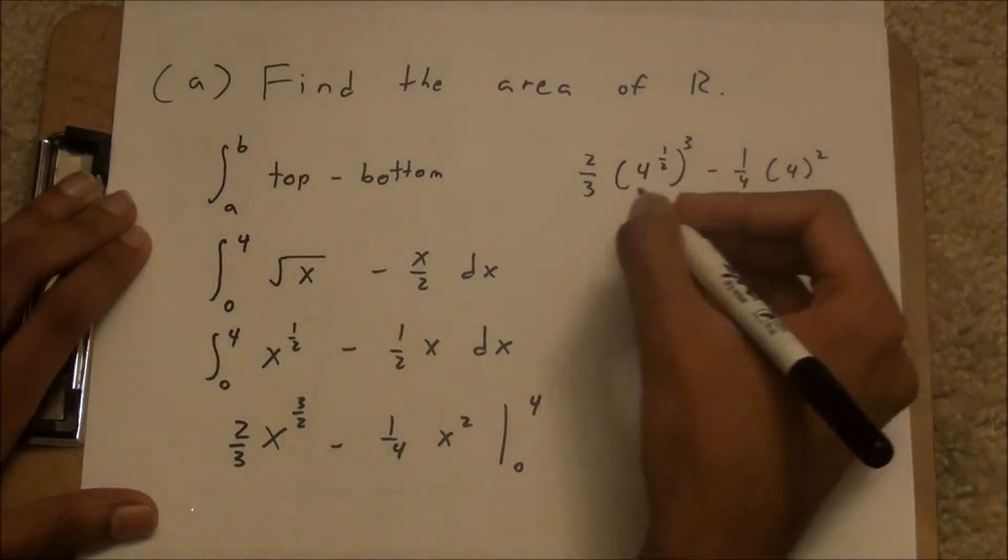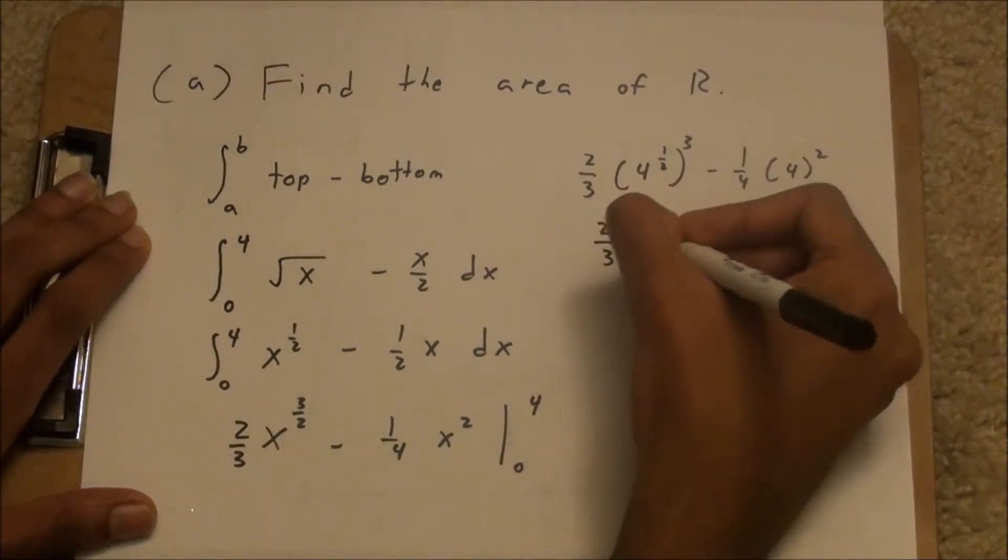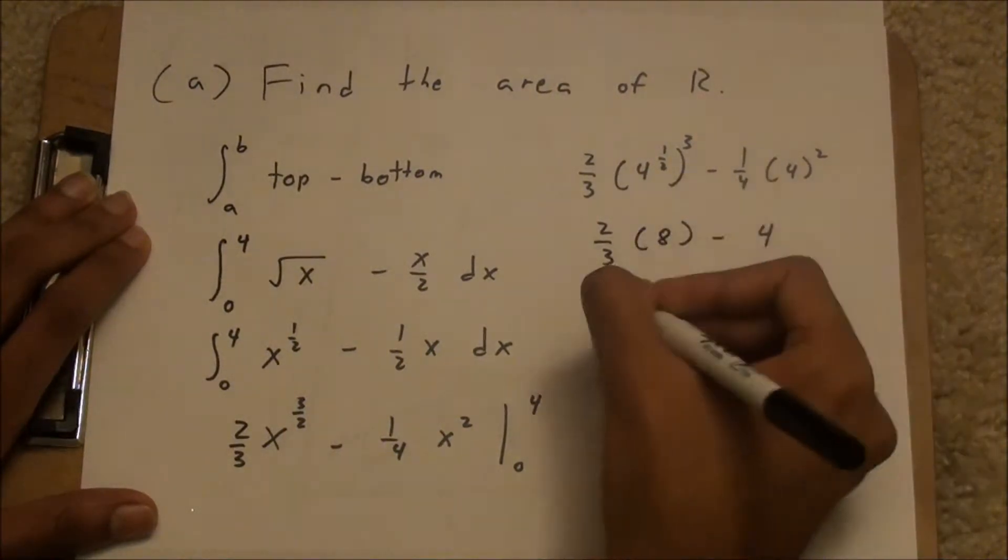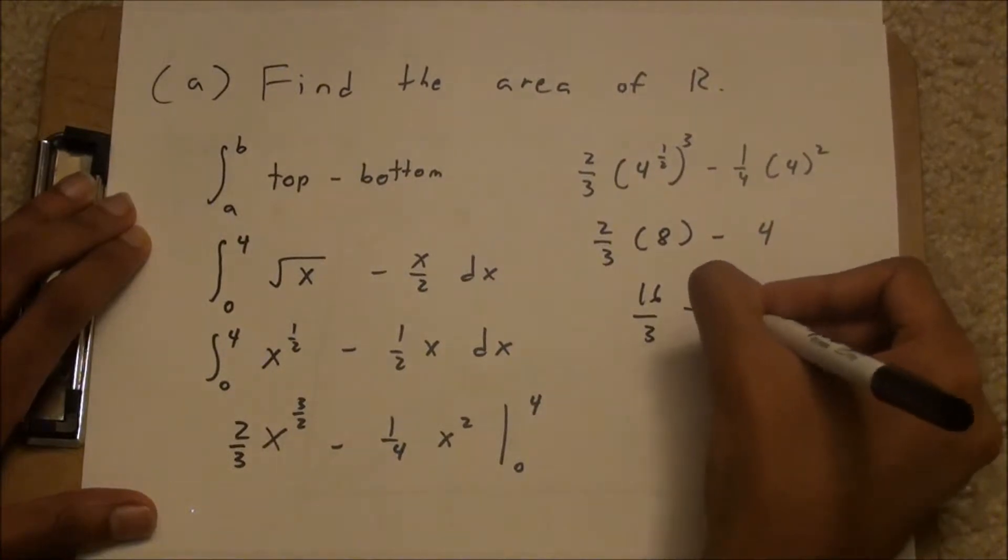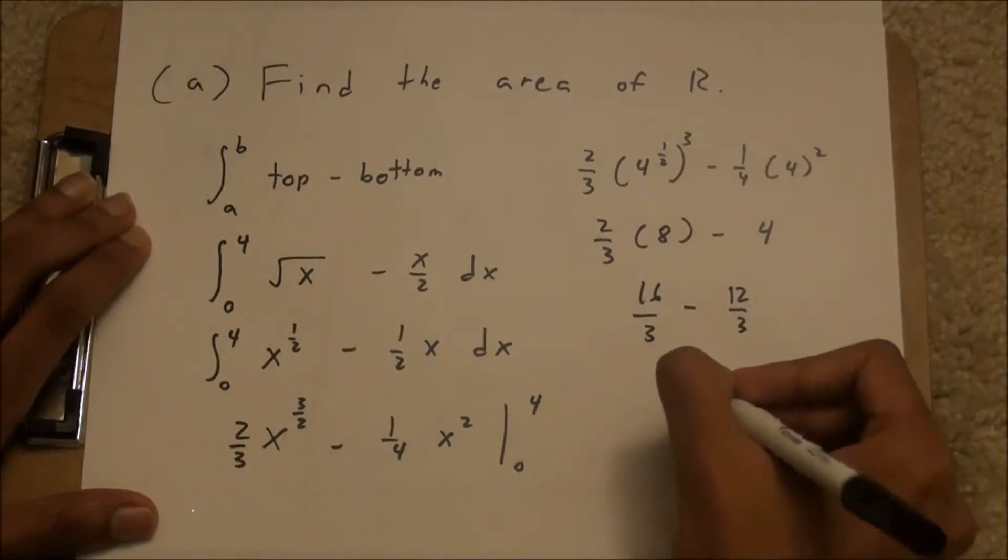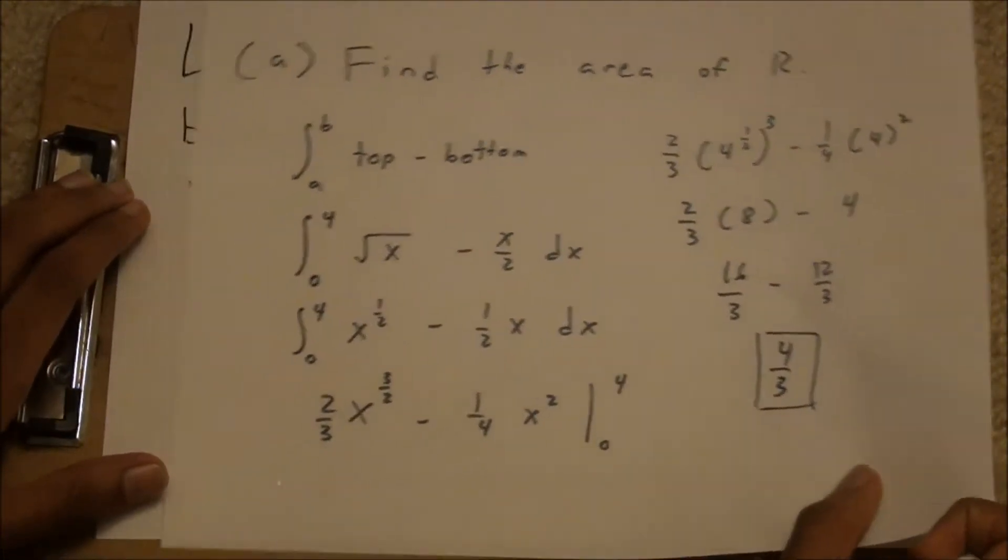And if you simplify that, you get 2 thirds of 8 minus 4, which is 16 thirds minus 12 thirds, which is 4 thirds. And that is the answer to Part A.